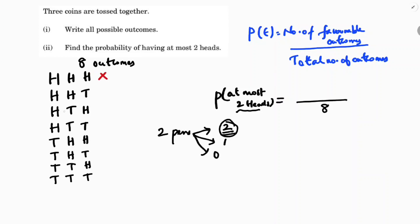So the favorable outcomes: HHH cannot be taken because it has three heads. HHT can be taken — two heads only. HTH can be taken — two heads. THH can be taken. HTT has one head. THT has one head. TTH has one head. TTT has no head, so that is also included.